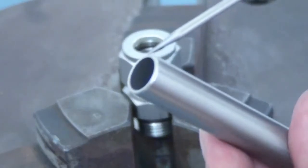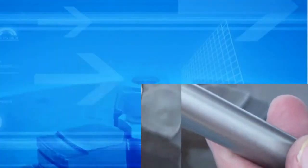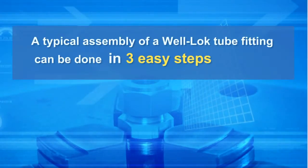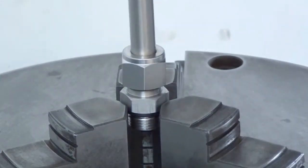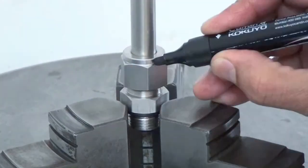Make sure that the tube is free of burrs and scratches. A typical assembly of a Well-Lock tube fitting can be done in three easy steps. Step 1: Fully insert the tubing into the fitting and rotate the nut finger-tight.